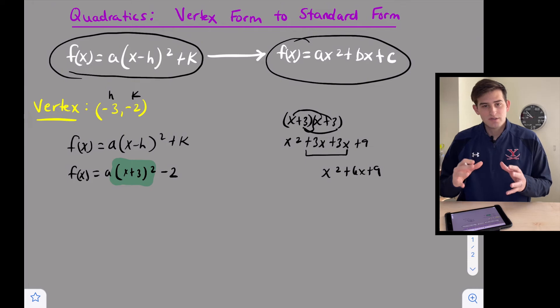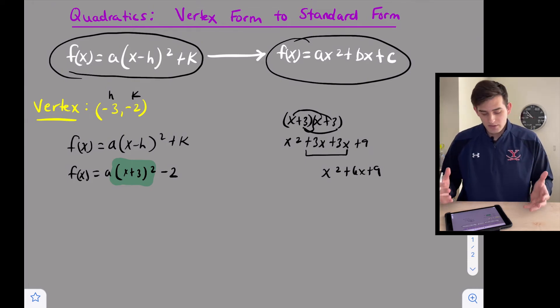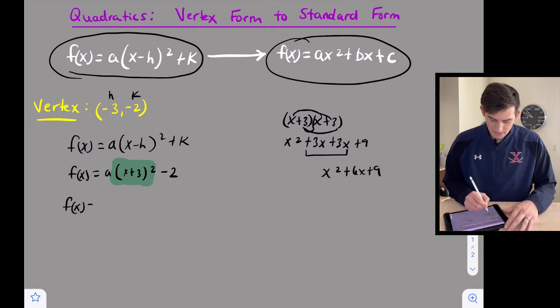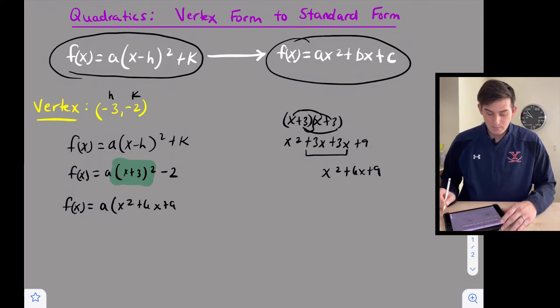Okay so (x + 3)² the square of a binomial factors as the perfect square trinomial of x² + 6x + 9. f(x) = a(x² + 6x + 9) - 2.